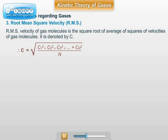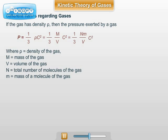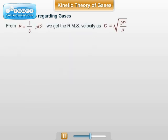Everything under the root sign can be denoted by C² bar. Hence, C = √(C² bar). Squaring both sides, we get C² = C² bar. The most important formula in the chapter is pressure exerted by the gas.